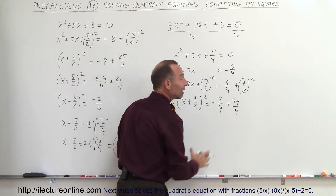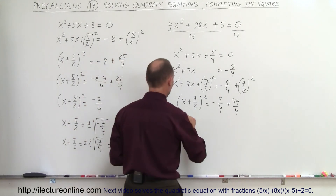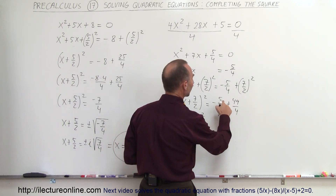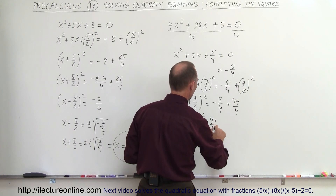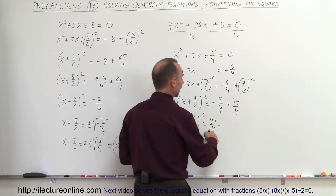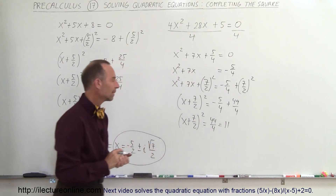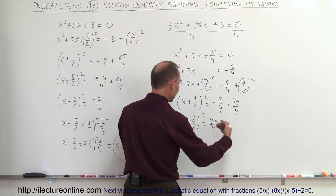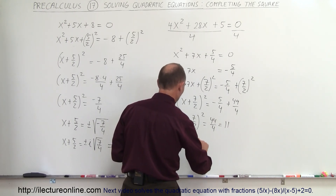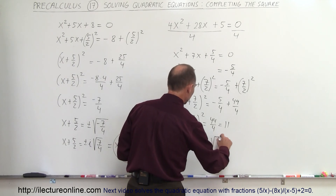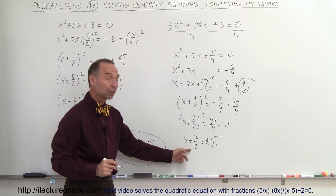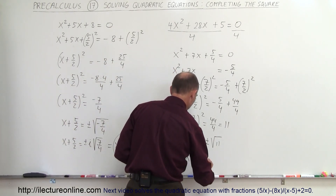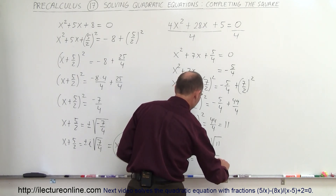We simplify, recognizing the left side is a perfect square: (x + 7/2)² = -5/4 + 49/4. Since they already share the same denominator, we add: -5 + 49 = 44, so 44/4 = 11. Therefore (x + 7/2)² = 11. Taking the square root of both sides gives x + 7/2 = ±√11, so x = -7/2 ± √11.